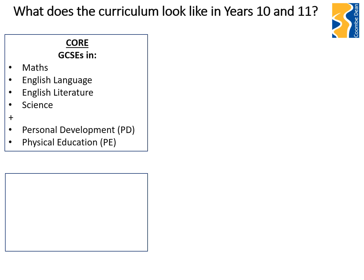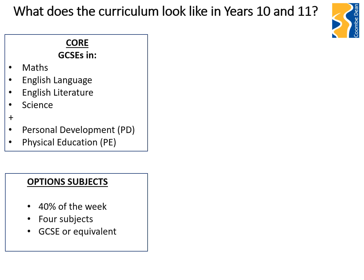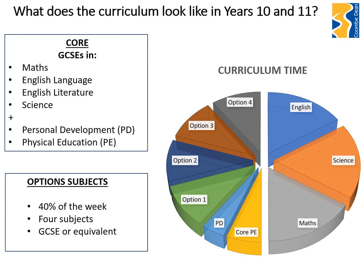The choices being made now — this options process — are going to make up around 40% of the remaining time during students' school week. Students are able to express a preference for four subjects. These subjects are GCSE or equivalent level subjects. The information provided by each subject will talk parents, carers and students through what is learned as part of the qualification and how the subjects are assessed. The chart on the right-hand side shows roughly, in proportions, how much curriculum time is spent on those core elements and on these options subjects.